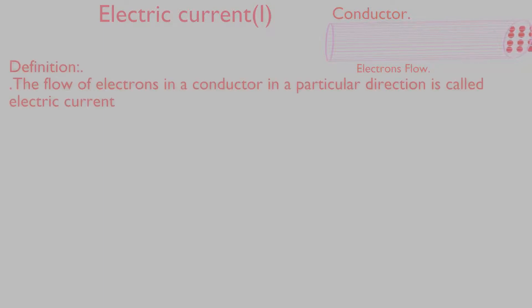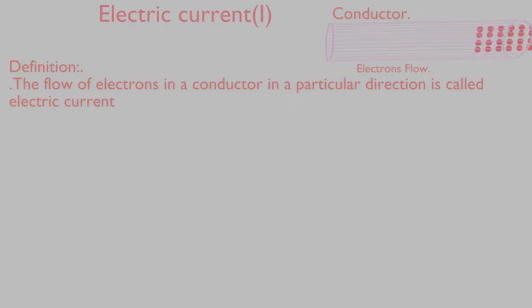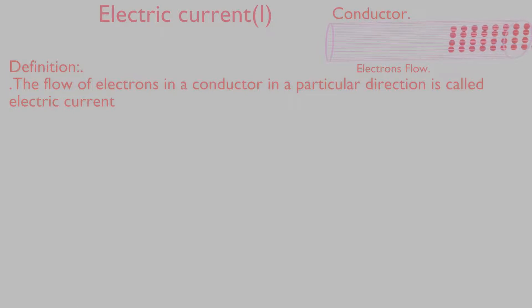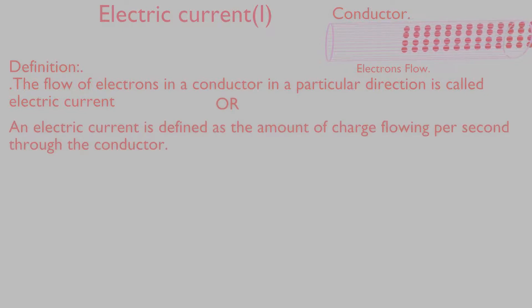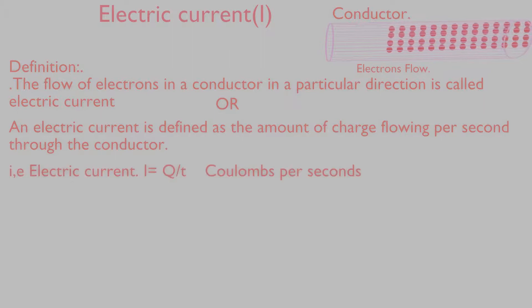Electrical current, I — Definition. The flow of electrons in a conductor in a particular direction is called electric current. Or, an electric current is defined as the amount of charge flowing per second through the conductor.